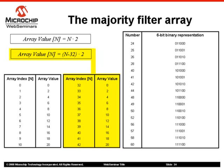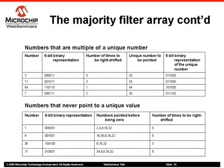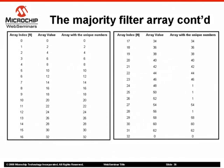The 16 unique index values are selected using the following majority function criteria: an array index number is a unique value when its binary representation contains a majority of ones in the three most significant bits, followed by a majority of zeros in the three least significant bits. The 48 remaining array numbers point to the unique values in case a true-to-false condition occurs. There are some values that never point to any of the unique values because they are not multiples of any of the 16 unique numbers. Those numbers are pointed to their multiple and then trapped in a loop, so that the filter waits for a new value which points to a unique number.